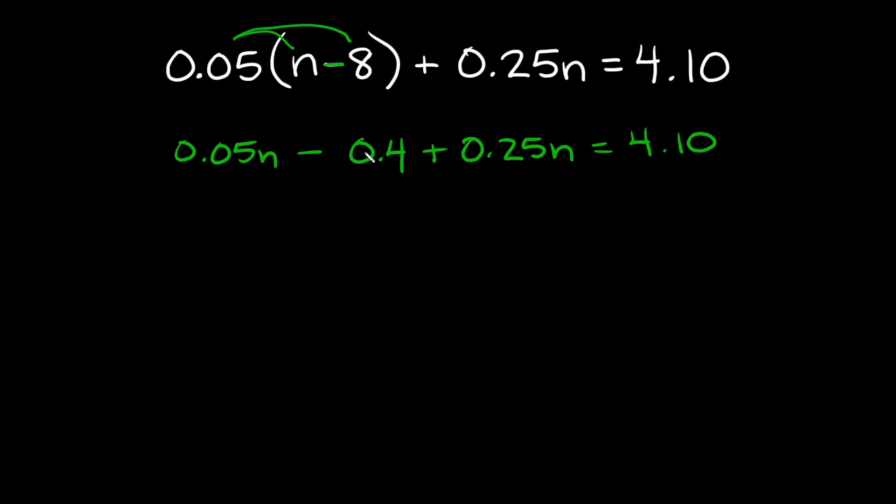In order to move this negative 0.4 over we're going to add 0.4 and what you do to one side of an equation you do to the other, right? So we're going to add 0.4 on this side also.